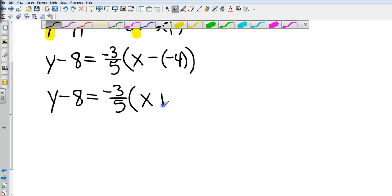So let's clean this up a little bit. I've got y minus 8 equals negative three-fifths times (x plus 4). That is in point-slope form.